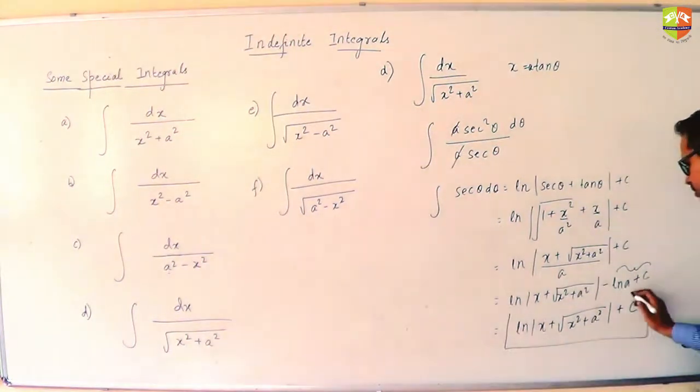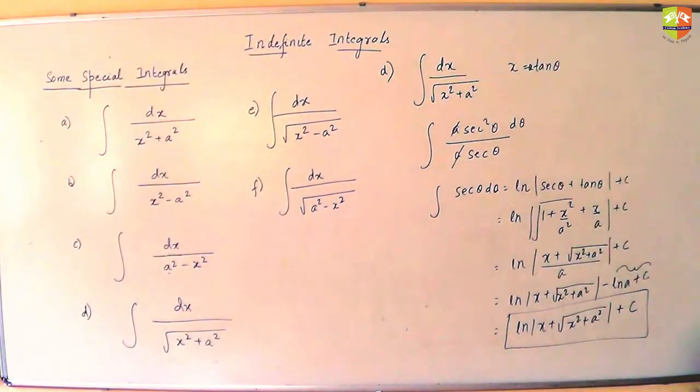Now please note sec theta would be root 1 plus x squared by a squared and tan theta would be x by a. So basically it becomes ln x plus root x squared plus a squared divided by a. Now normally what we do is we write this as minus ln a plus c and we combine this under one constant of integration. So your result would be ln x plus root x squared plus a squared mod plus c.